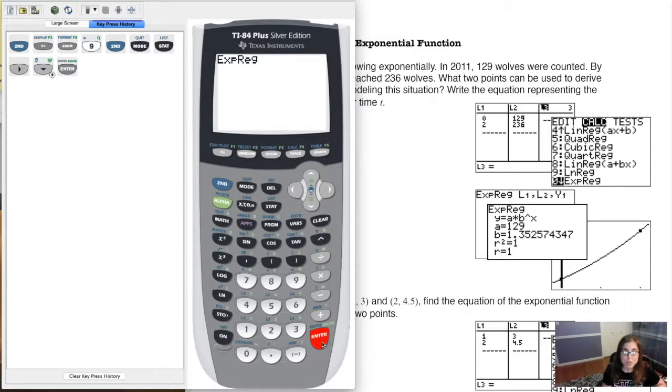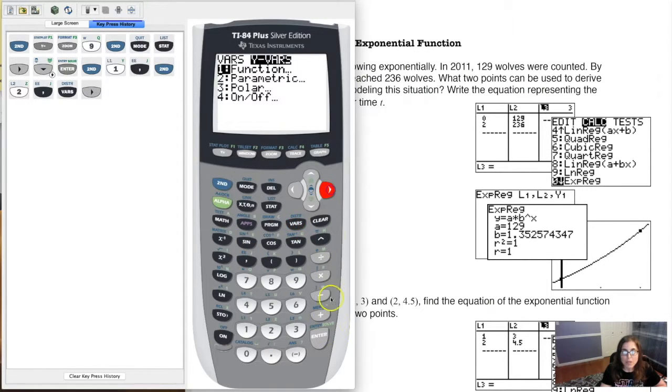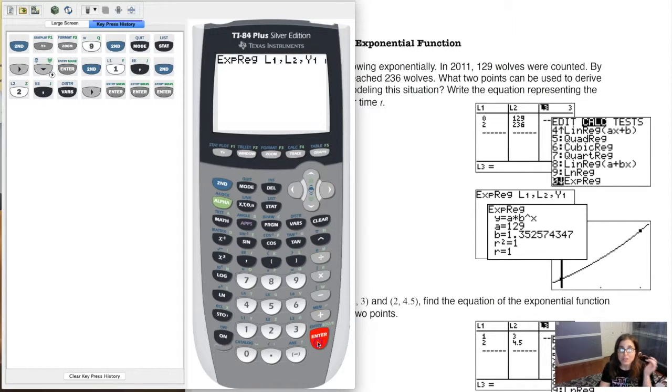So let's opt for exponential regression and it's very much the same program as we did for linear and eventually quadratic and cubic. So I do L1 comma L2 comma and let me drop that into Y1. Then when I hit enter, voila, right? There's that 129, my initial value, and there's my base of 1.353. We had found that by hand. I would argue it's easier to find it using exponential regression.